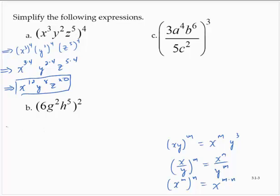Exercise B is similar. I would have 6 to the 2nd, g to the 2nd to the 2nd, and h to the 5th to the 2nd. 6 to the 2nd is 36. g to the 2nd to the 2nd — multiplying exponents — gives you g to the 4th, and h to the 5th to the 2nd — multiplying exponents — gives h to the 10th.